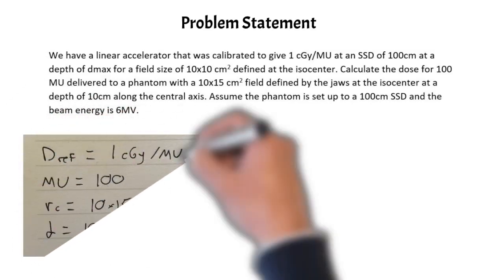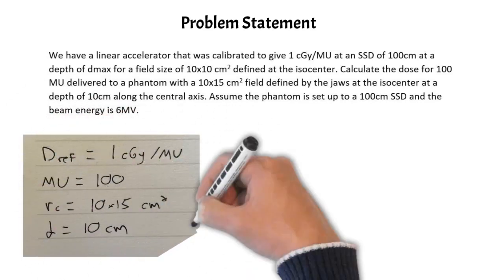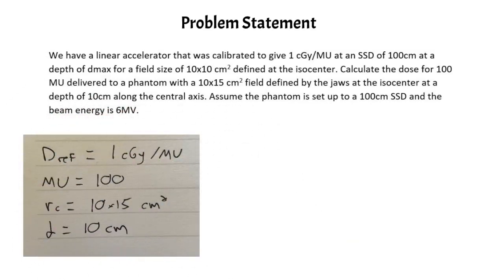I typically like to start these problems by writing down some parameters. We are given the reference dose and the MU setting, but by themselves that doesn't really tell us anything about the dose. The monitor unit doesn't tell us anything about dose unless we know the reference conditions, which we are given to be 100 cm SSD, depth of D-max, and a 10×10 field. So we know that the LINAC is giving 1 cGy per MU in those conditions.